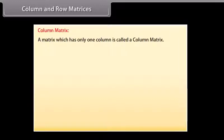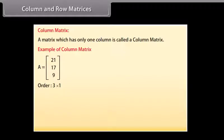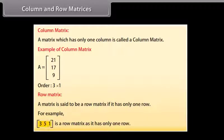Column and row matrices. A matrix which has only one column is called a column matrix. For example, matrix A with entries 21, 17, 9 arranged column-wise has three rows but only one column, so it is a column matrix of order 3 by 1. A matrix is said to be a row matrix if it has only one row. For example, a row matrix A with entries 3, 5, 6.